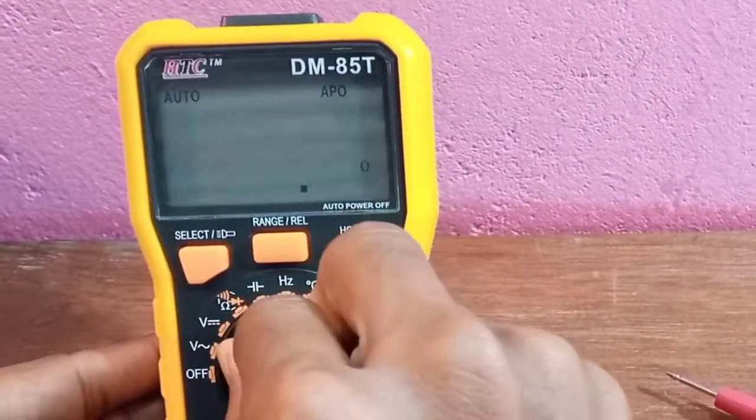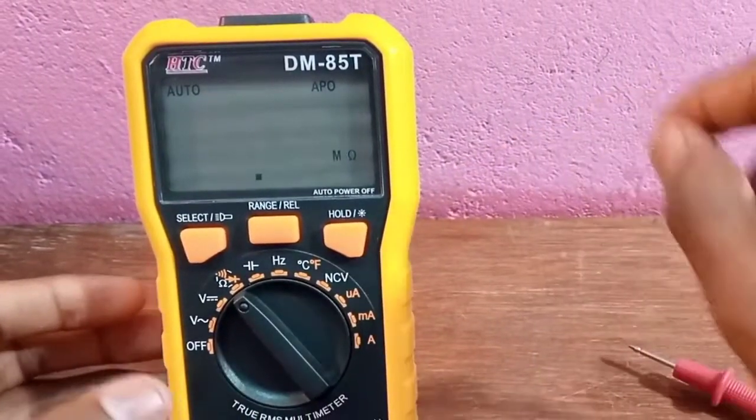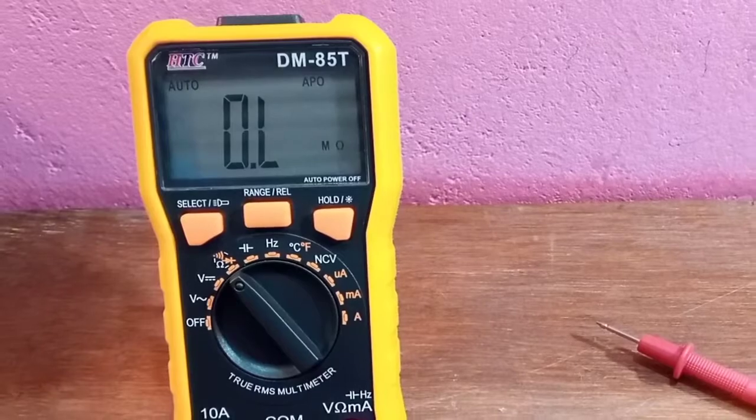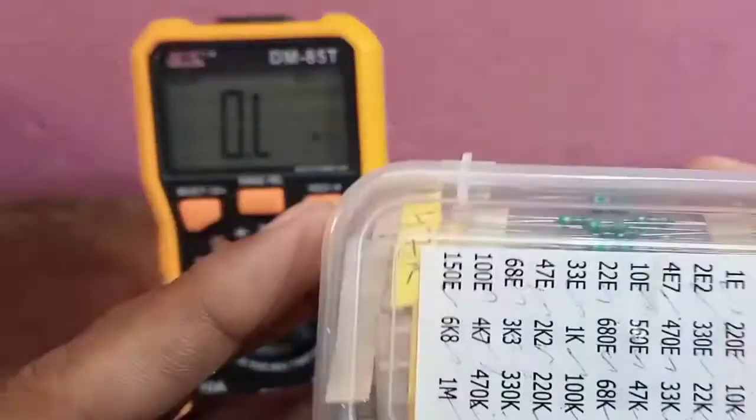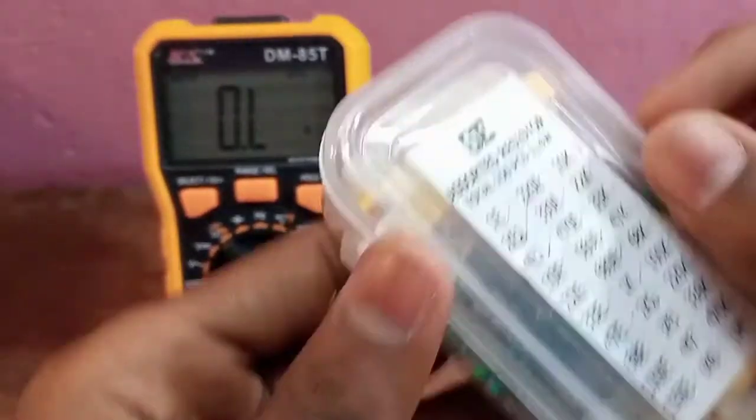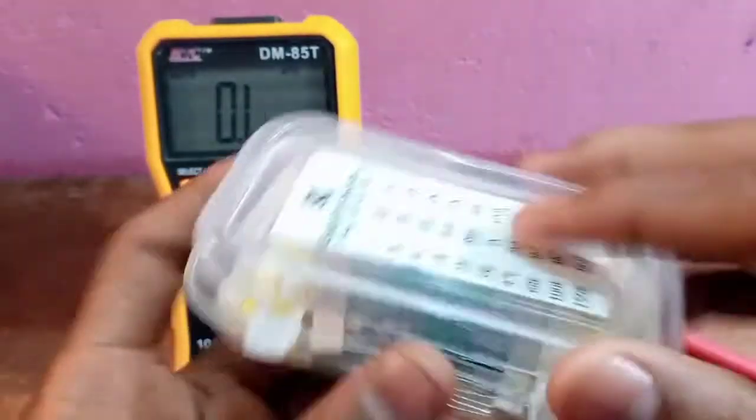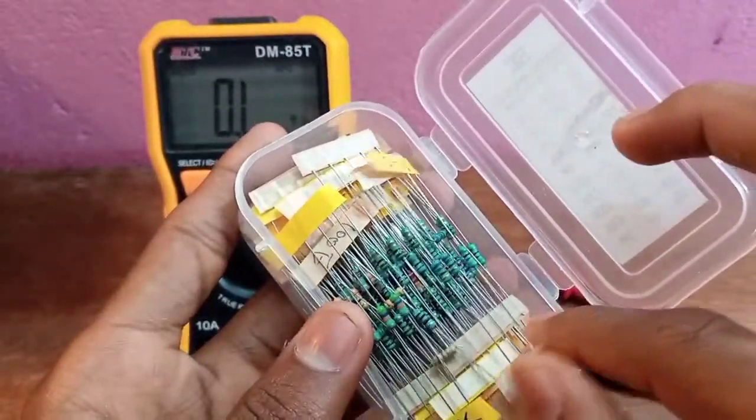Let's measure resistance. This is the resistor box. I choose a 47 ohm resistor value to check if the multimeter measures correctly or not.